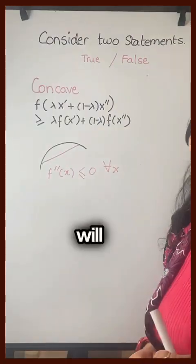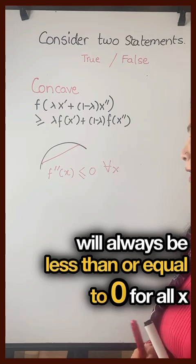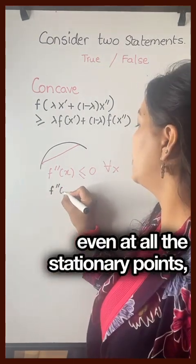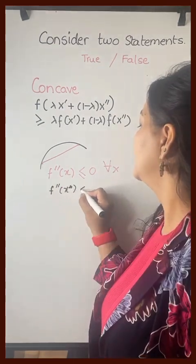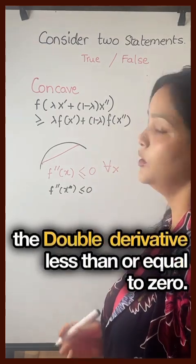Hence for a concave function, f''(x) will always be less than or equal to zero for all x. It follows that even at all stationary points, you will always have the double derivative less than or equal to zero.